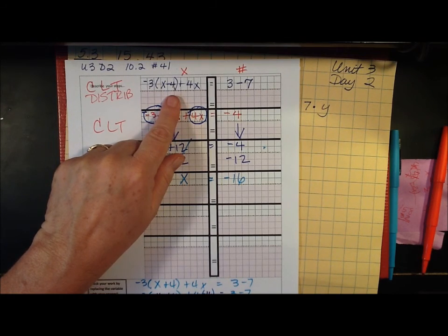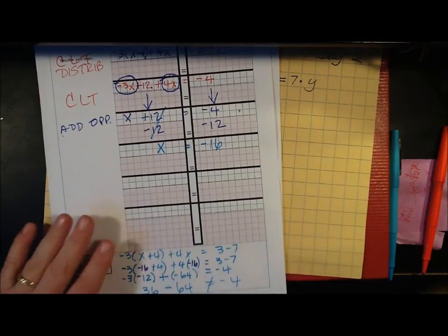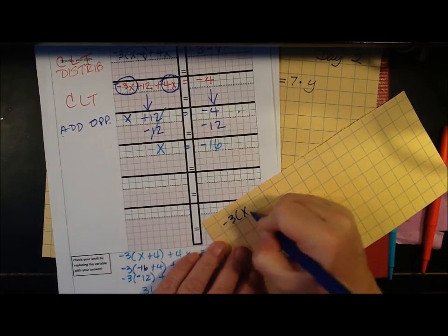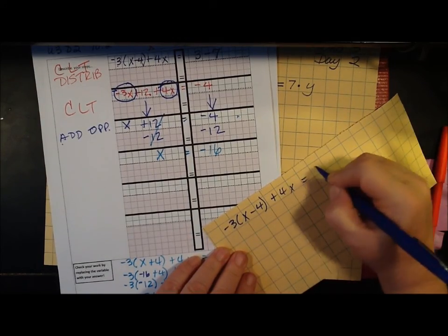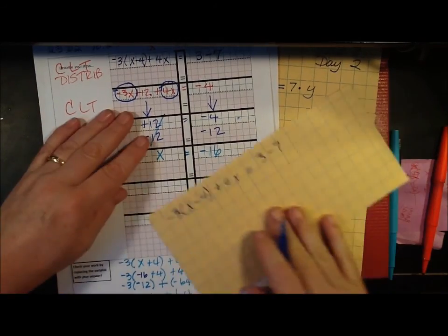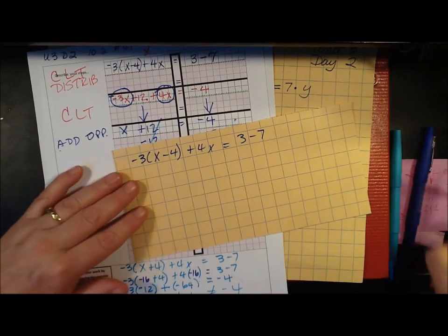So I'm going to try it again the right way. Negative 3 times x minus 4 plus 4x equals 3 minus 7. And I'm going to plug in negative 16 again.